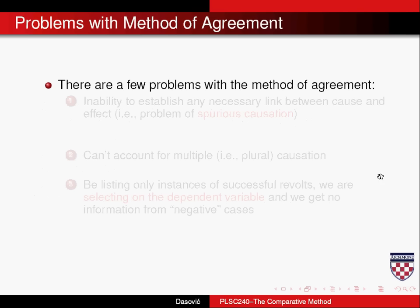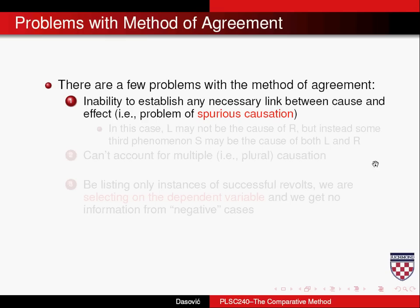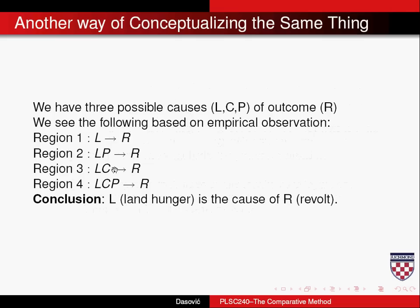There are a few problems with the method of agreement. One is what's called spurious causation — the inability to establish any necessary link between the cause and the effect. We may see that L causes R in each region, but maybe there's some other cause S that you didn't account for that in fact causes L, and then L leads to R — so it's not L but S causing the effect. Or S could cause both L and R simultaneously. That would mean the true cause of revolt is this other thing S, which causes both land hunger and revolt. That's what we mean by spurious causation.